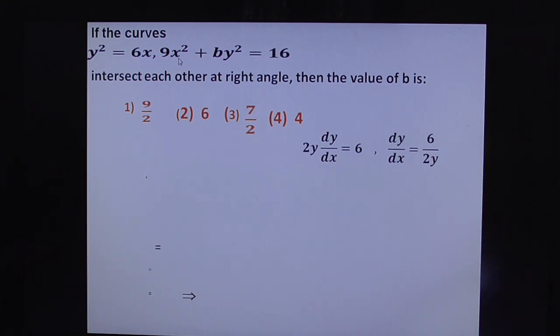Now differentiate the second curve. 9x² differentiation gives 18x plus b·y² differentiation 2by dy/dx equals 0. Therefore, differentiation of the second curve is 18x + 2by dy/dx = 0. So dy/dx = -18x/(2by). This is slope M₂, and at (x₁, y₁) you can write M₂ as -9x₁/(by₁). This is M₁, this is M₂.